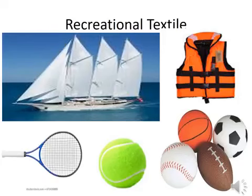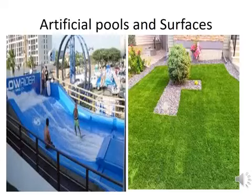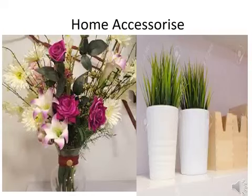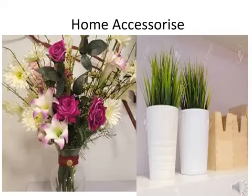Recreational textiles include sailboards, life jackets, tennis rackets, footballs, and other balls — these are all textile products. Artificial turf and artificial surfaces also use different fibers. For home accessories, artificial flowers and artificial pots are also made from different fibers.